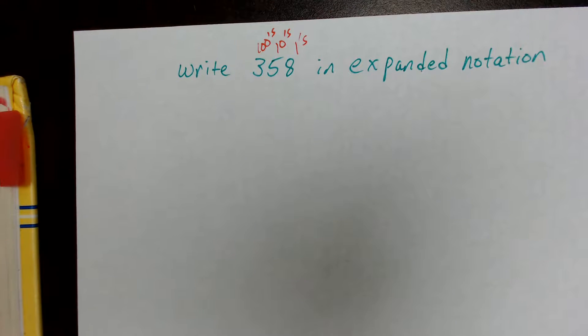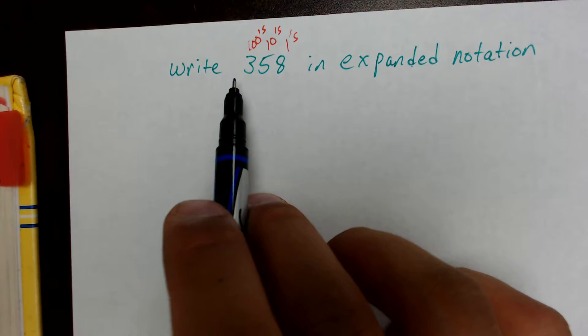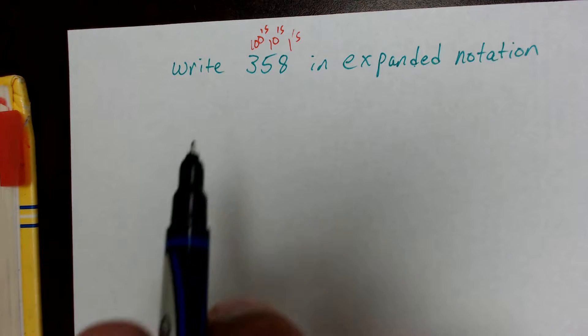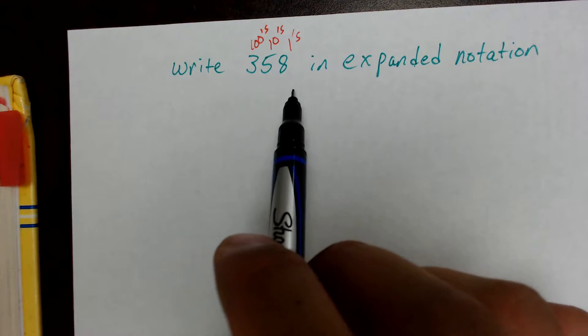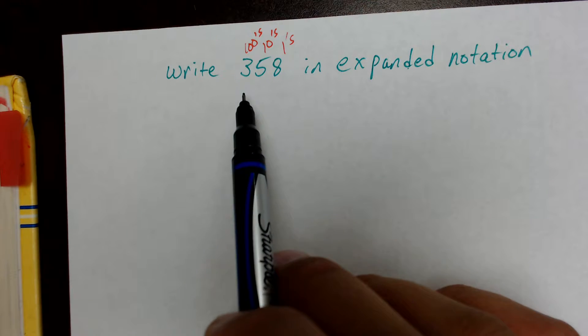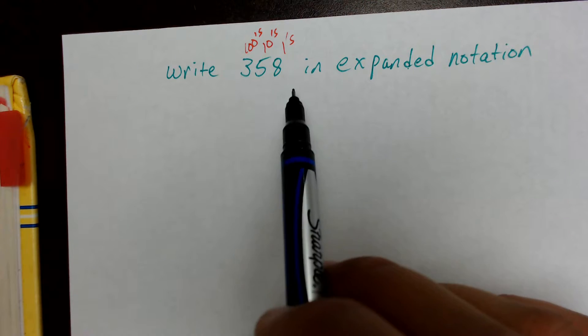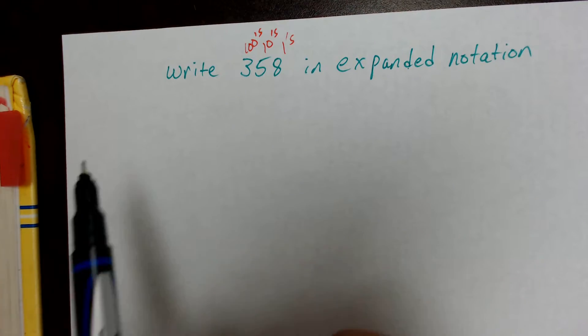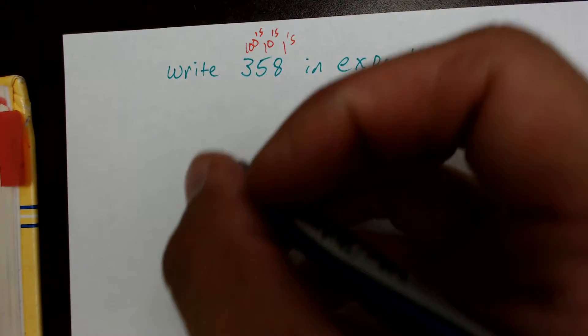And there's a specific way to write it. We're going to start all the way to the left of the number, the 3 in the hundreds place. Expanded notation makes sure that you understand the value of each of these numbers within the number 358. For example, the number 3 actually has a value of 300. If we were to take away the 5 and the 8, the number would be 300. So that's going to be the first thing we write in expanded notation.